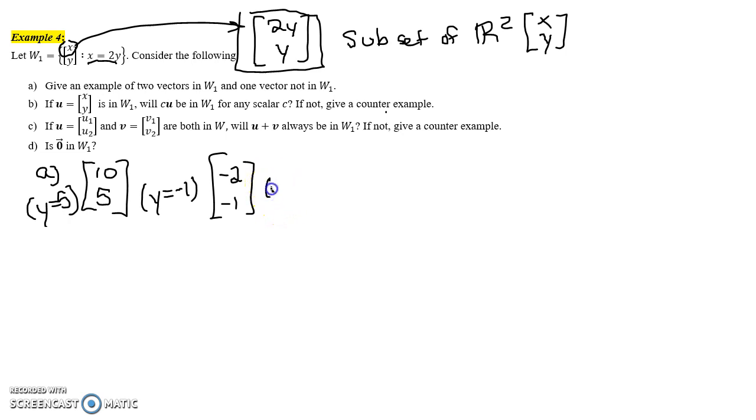And maybe just one more. Let's say the y component is 3, so y is 3, x is 2 times y, so that's 6. So there's examples of vectors in W₁. A vector that is not in W₁ would be anything where the first component is not 2 times the second component.